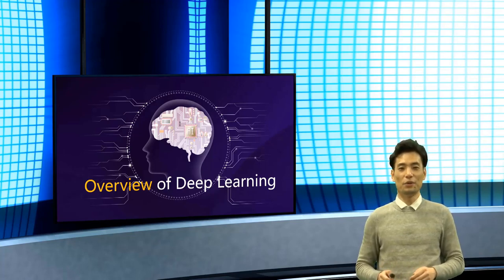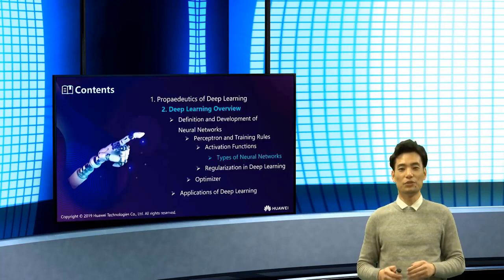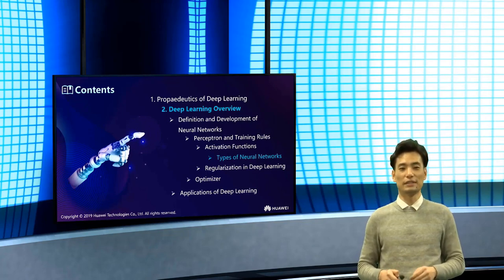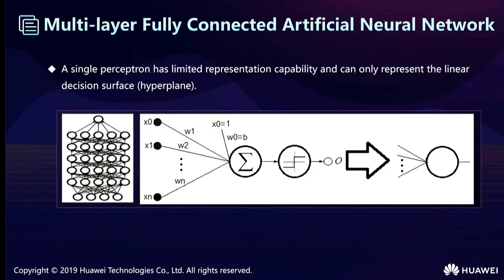Welcome back. In this video we will introduce the types of neural networks and some important components of neural networks. The first is multi-layer fully connected artificial neural networks. In the previous course we learned that a single perceptron has limited representational capability and can only represent a linear decision surface. If we connect many perceptrons, like human brains, and replace the activation functions with non-linear functions, we can represent a wide range of non-linear surfaces.